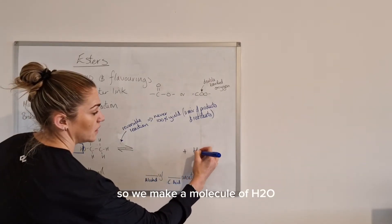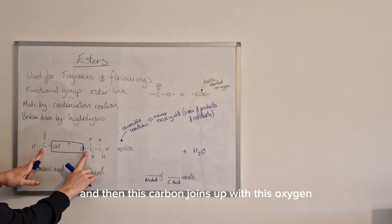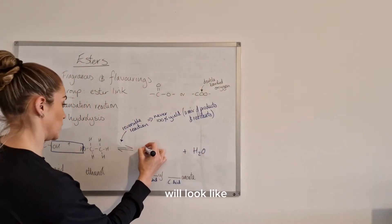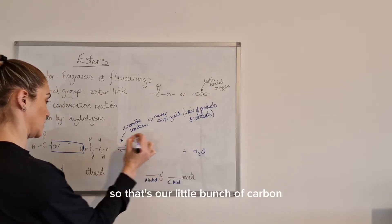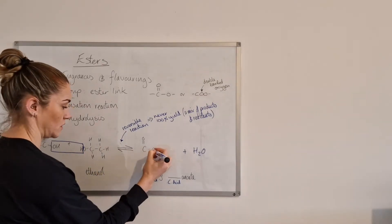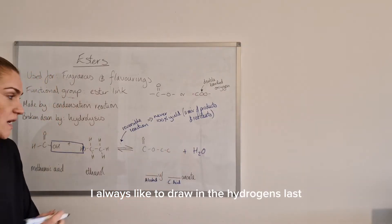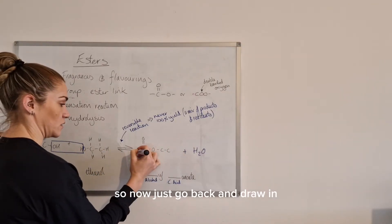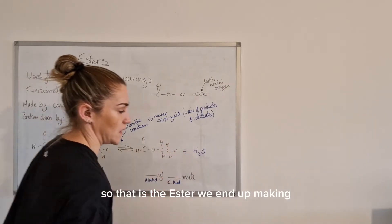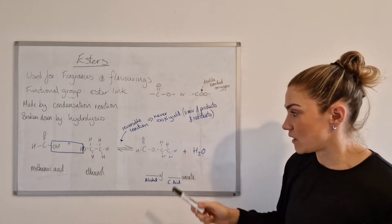So we make a molecule of H₂O, and then the carbon joins up with the oxygen to make our ester. I always like to draw in the hydrogens last, so I'll go back and draw those in. That is the ester we end up making from this carboxylic acid and this alcohol.